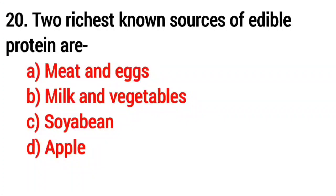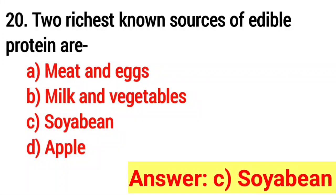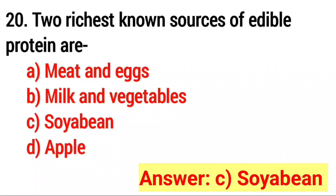Question number twenty: two richest known sources of edible protein are? Answer option C, soybean.